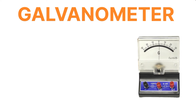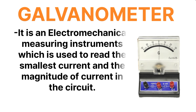A galvanometer is an electromechanical measuring instrument which is used for measuring electric current in a circuit. It is generally used to detect a small amount of electric current or measure its magnitude — the magnitude of electric current is measured by a galvanometer.